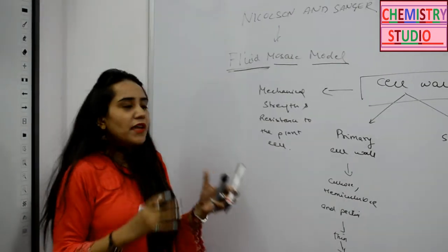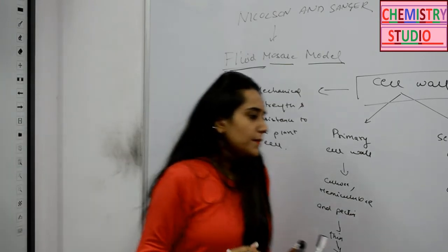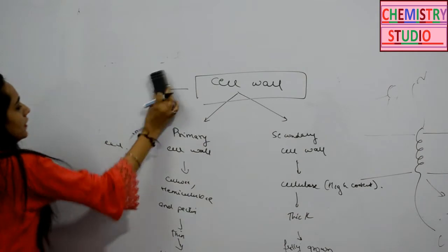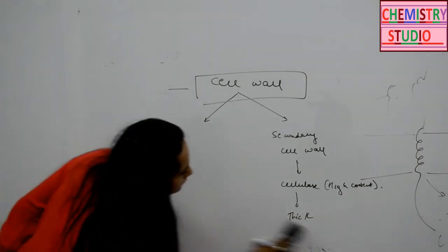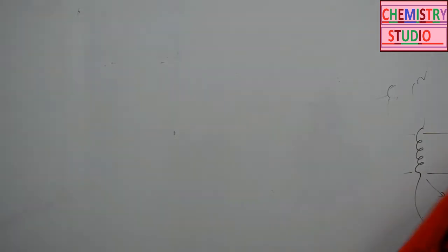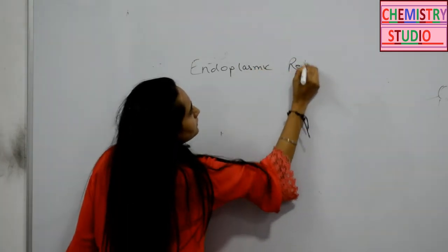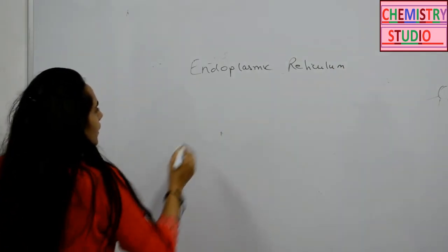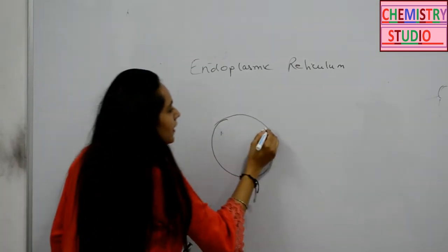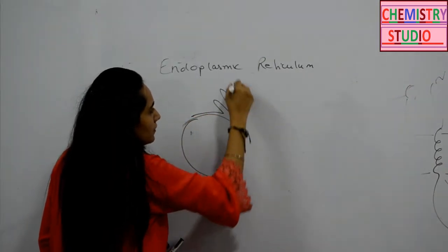Now coming to organelles — we have covered the cell membrane and the cell wall, the outer coverings. Let's now discuss about the endoplasmic reticulum. The endoplasmic reticulum is in continuation with the nuclear envelope. The nuclear envelope has two membranes — an inner membrane and an outer membrane — and the endoplasmic reticulum is continuous with the outer membrane.